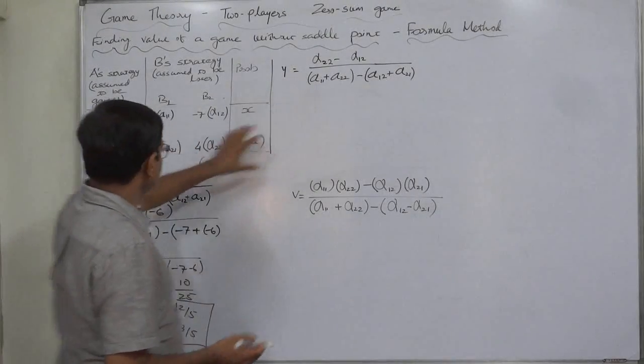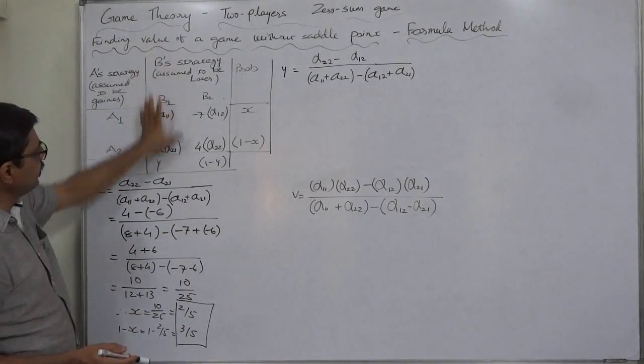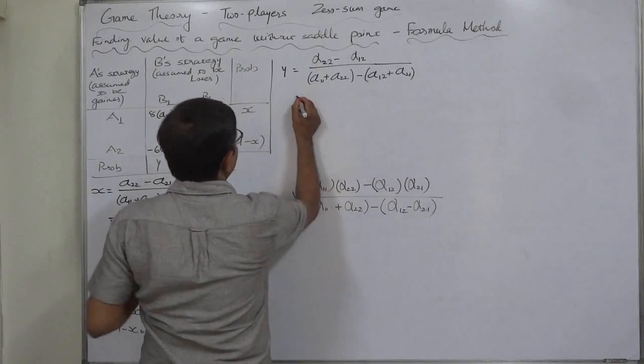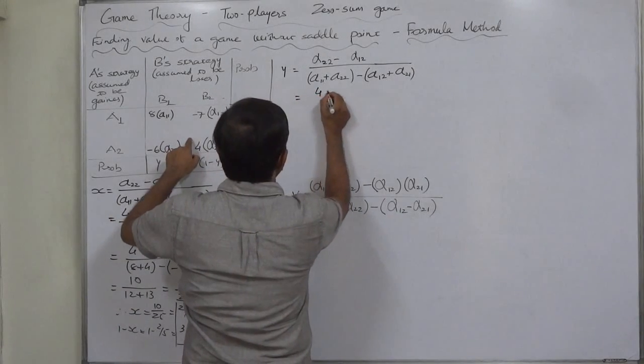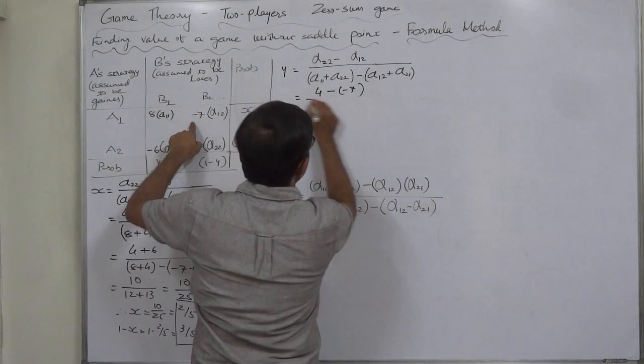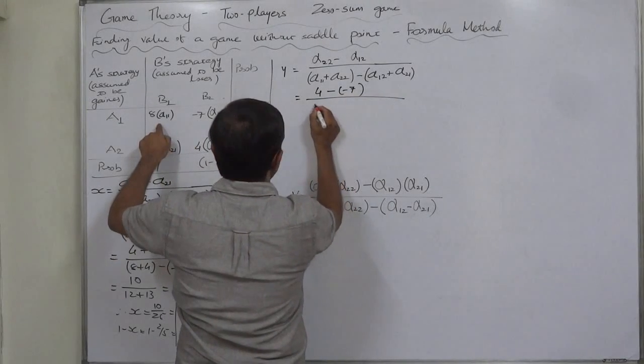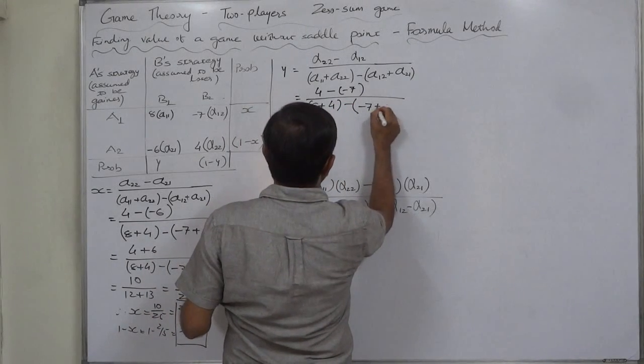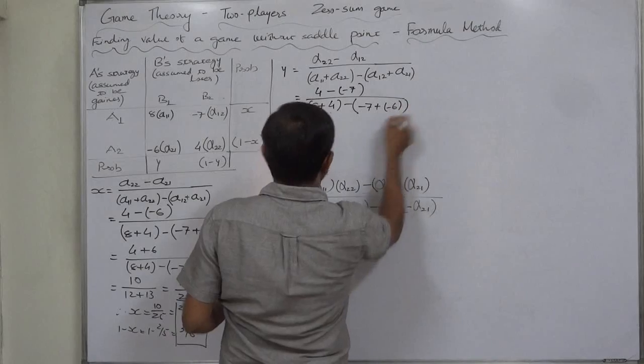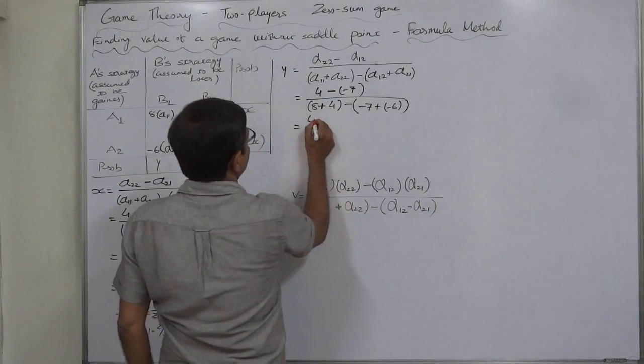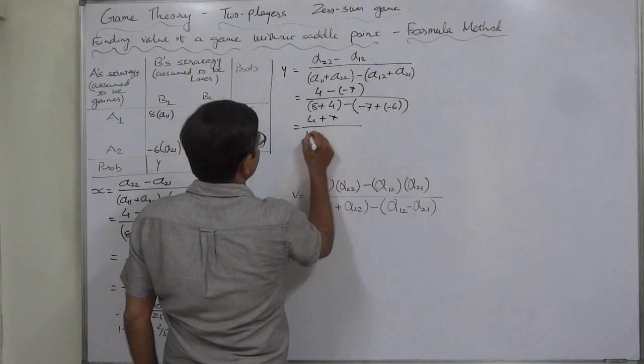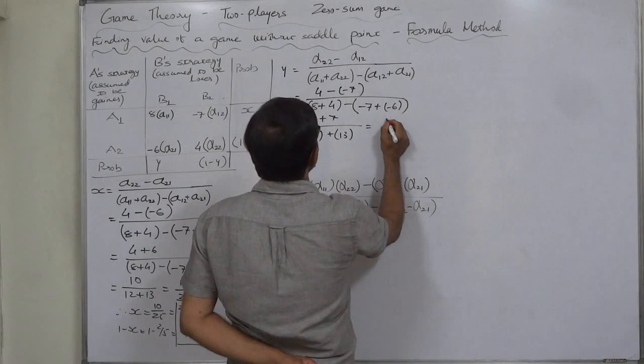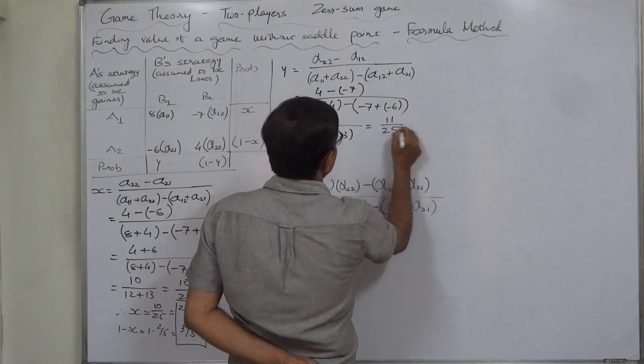Now Y that is the formula that B uses strategy B1. The formula of Y is alpha 2 2 minus alpha 1 2 upon alpha 1 1 plus alpha 2 2 minus alpha 1 2 plus alpha 2 1. Alpha 2 2 is 4 minus alpha 1 2 minus 7 upon the same denominator, that is 4 plus 7 upon 12 plus 13. So it is 11 by 25.